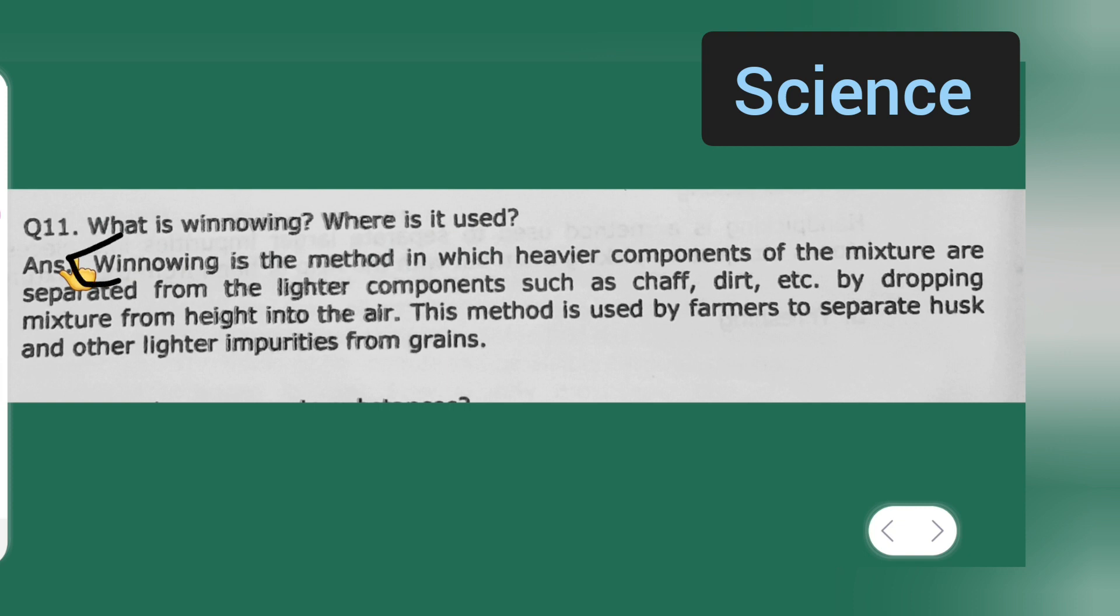The answer of winnowing is from here to here. Let me read it now. Winnowing is a method in which heavier components of the mixture are separated from the lighter components such as chaff, dirt, etc., by dropping mixture from height into the air. This is the answer of winnowing.